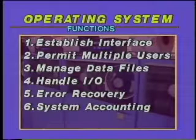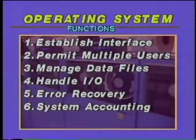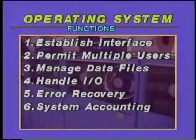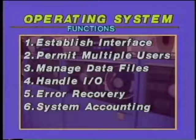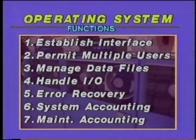System accounting is a sixth operating system function. This keeps track of machine resources so costs can be apportioned among multiple users — how much CPU time is used by each application, how many disk and tape records are written and read by each application. The last function provides maintenance accounting, keeping track of correctable machine errors to aid the maintenance and replacement of failing components. Operating systems available for today's microcomputers are approaching this sophistication. Gary Kildall shows one of his latest in the next segment.